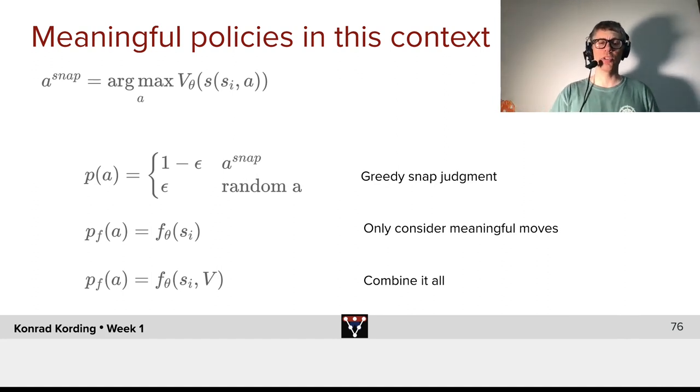Alternatively, we could have a version that combines it all, where the probability for an action depends on the position of the bot and maybe calls to the value function as well.